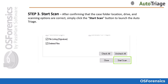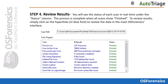In step three, you will begin the auto-triage scan by clicking the Start Scan button. You will know when a scan is completed from the Status column. Each operation will either say In Progress or Finished. To review results from finished scans, simply click on the blue hyperlinks in the Task column.